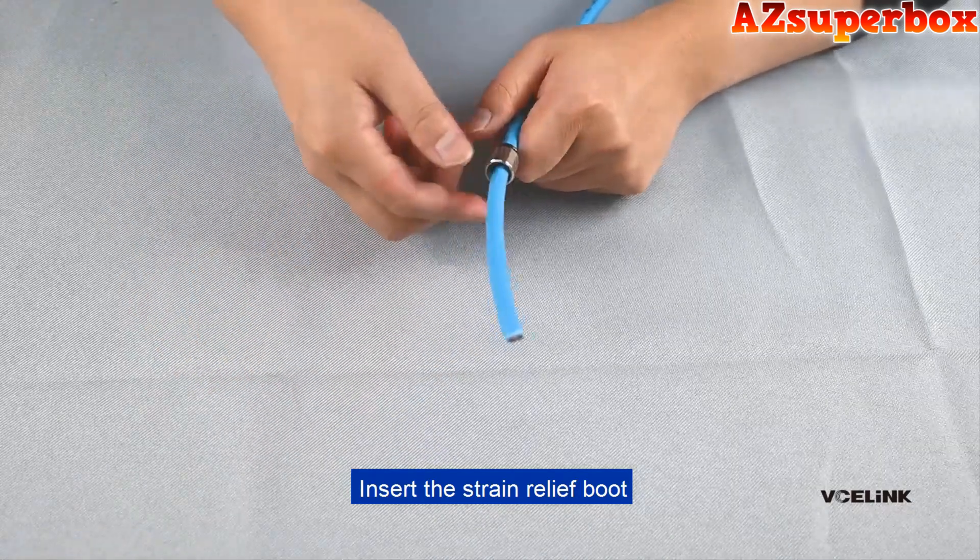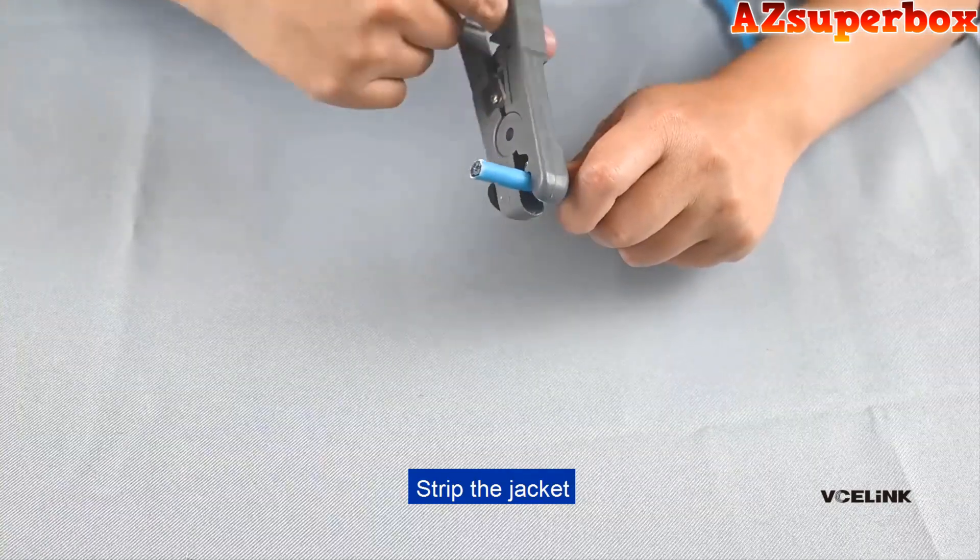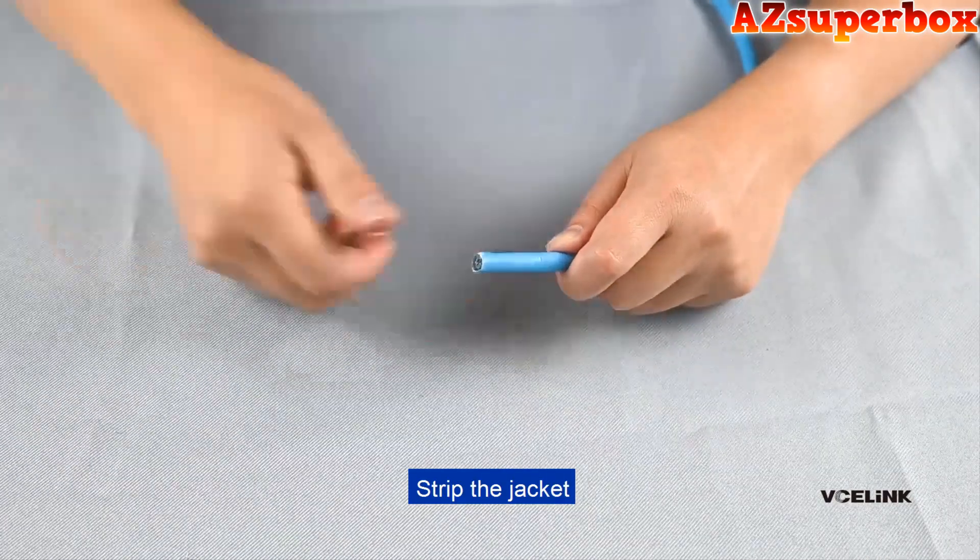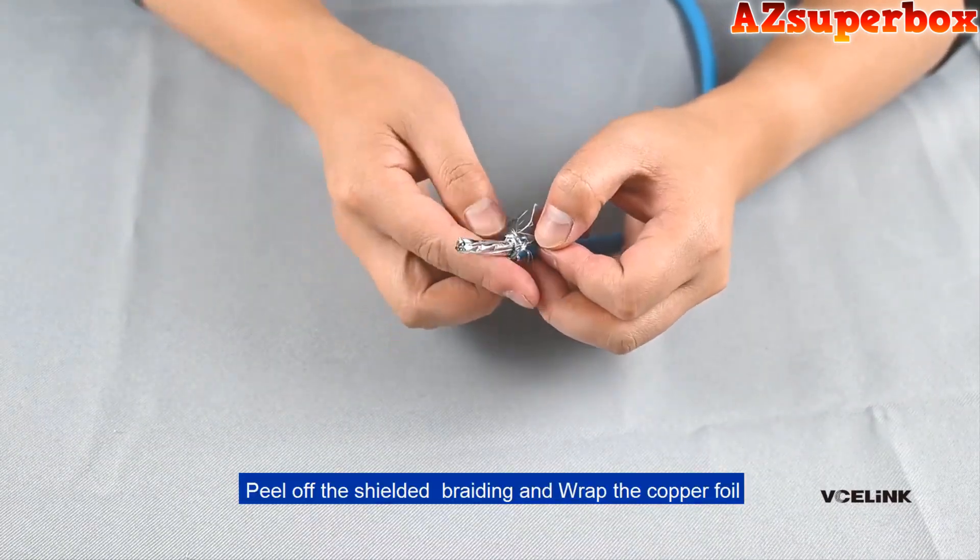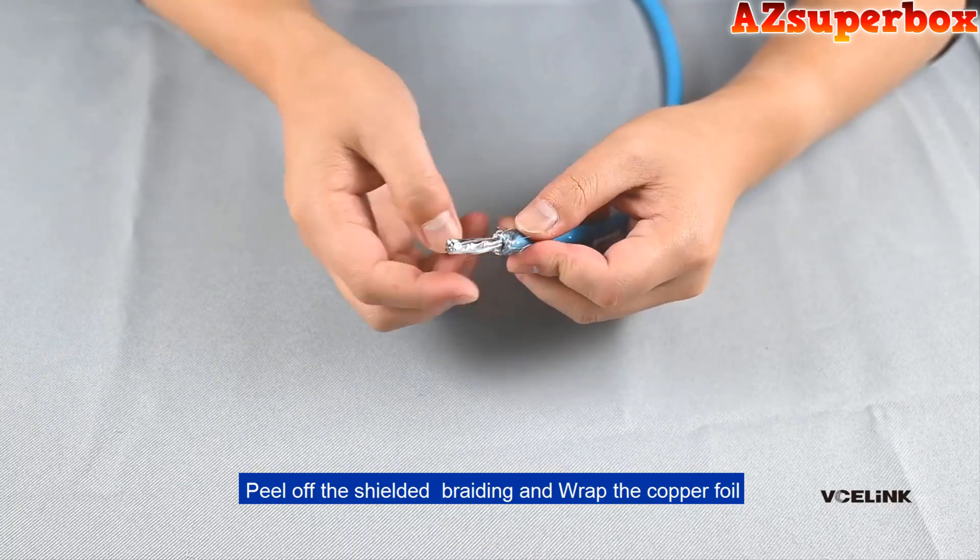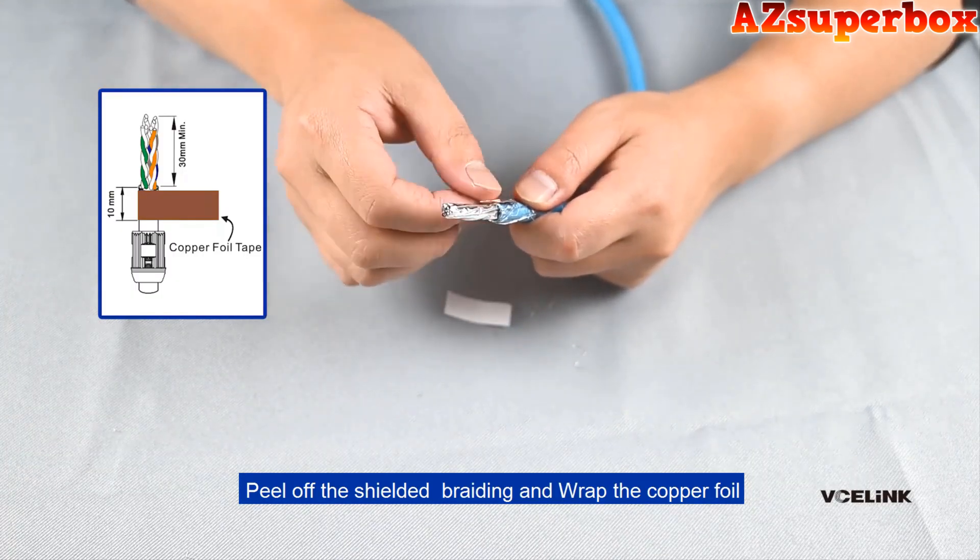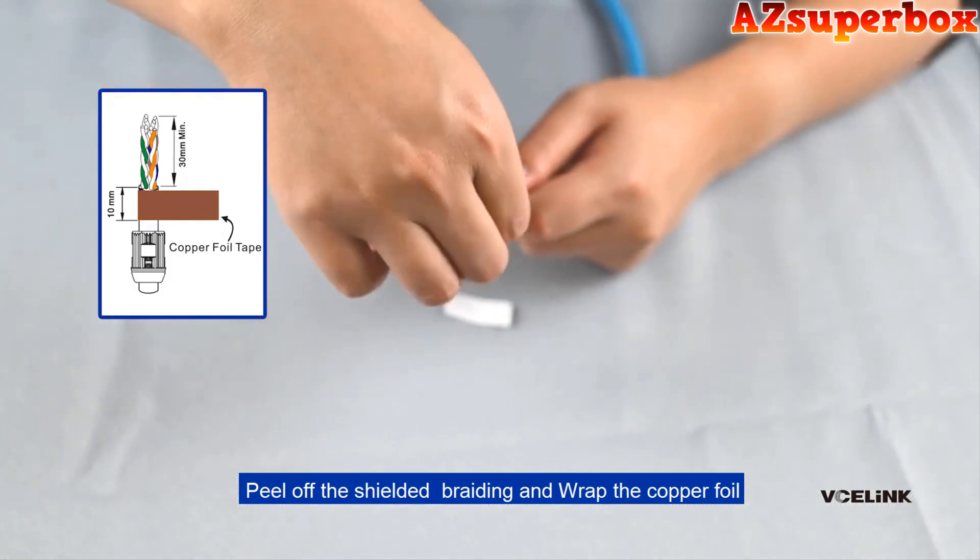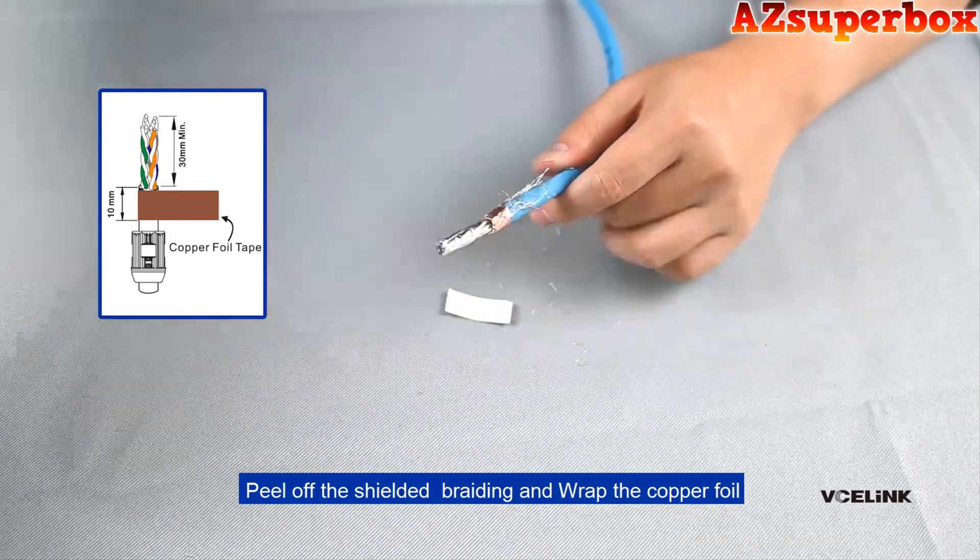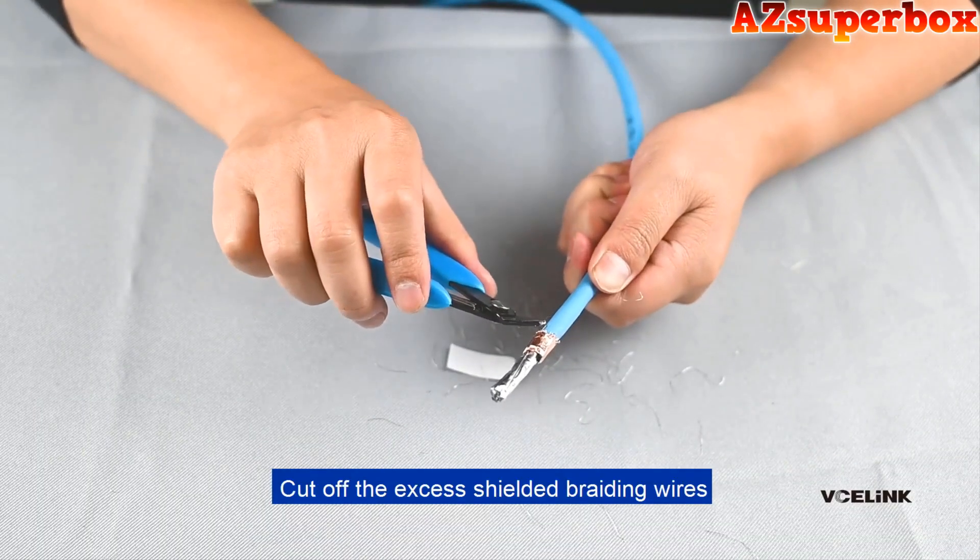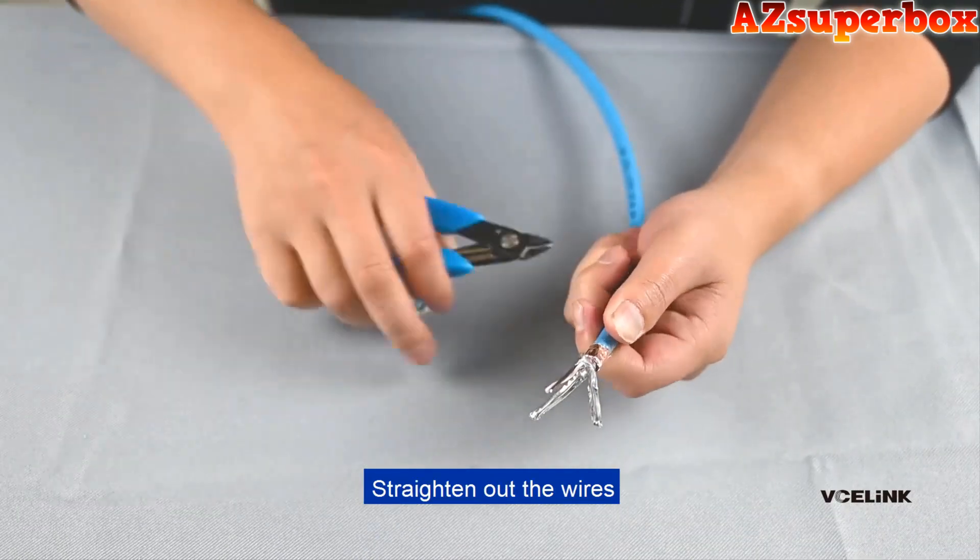Insert the strain relief boot, strip the jacket. Peel off the shielded braiding and wrap the copper foil. Cut off the excess shielded braiding wires. Straighten out the wires.